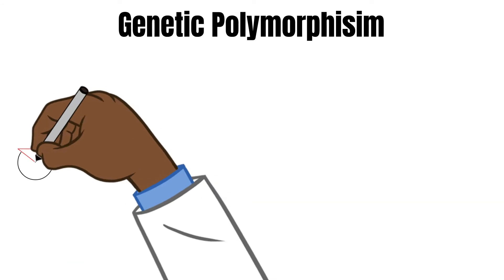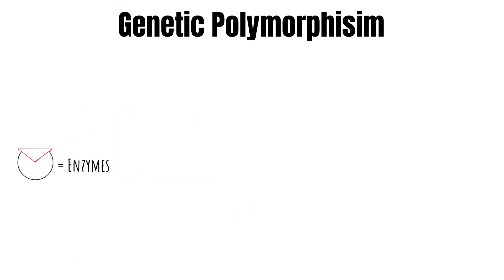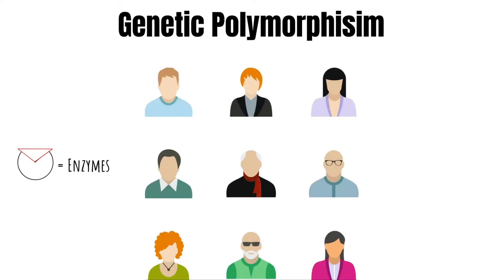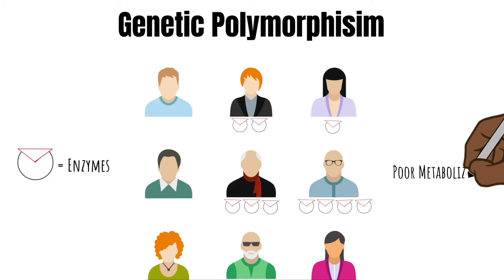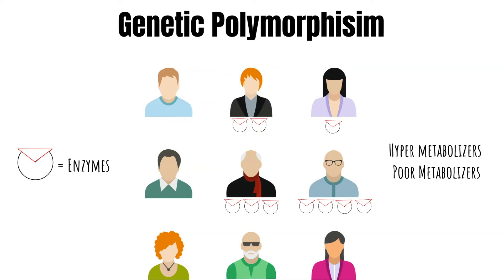First is genetic polymorphism, which simply means there are at least two variations of a thing. In this case, we are focused on the enzymes. There are people who have a lot of the enzyme and some who have very little — we refer to them as hyper metabolizers or poor metabolizers. Depending on your nationality or ethnicity, you may express more of one type of CYP enzyme compared to another, and this will definitely affect different drugs that go through these CYP enzymes.